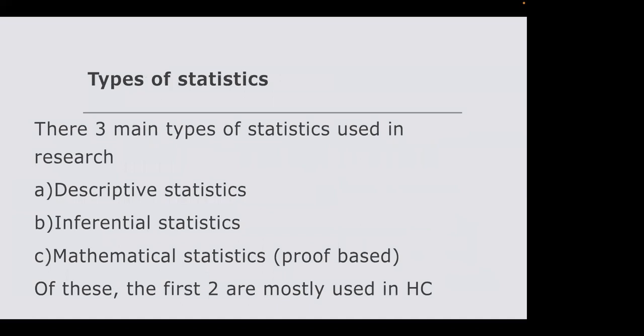There are many branches of statistics, but the two main ones we focus on are descriptive statistics and inferential statistics. There is also mathematical statistics, which is proof-based and favored by economists. Other forms include Bayesian statistics and so on, but in most research papers — especially in healthcare — the top two are descriptive and inferential statistics.